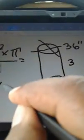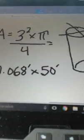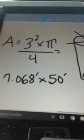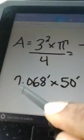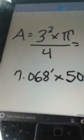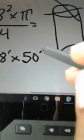The square feet of the top of the shaft is 7.068 times the length of the shaft, which is 50 feet. Not times, but divided by 27.